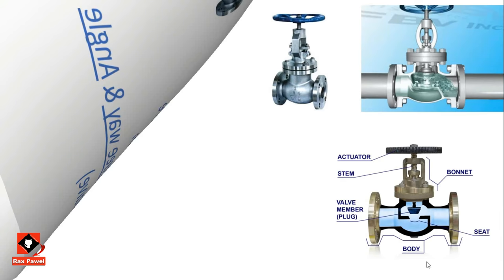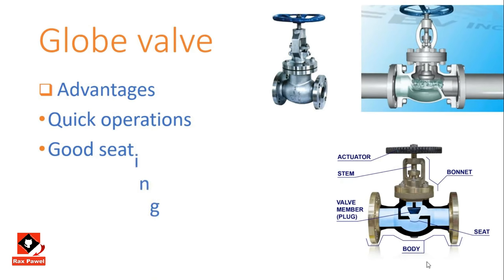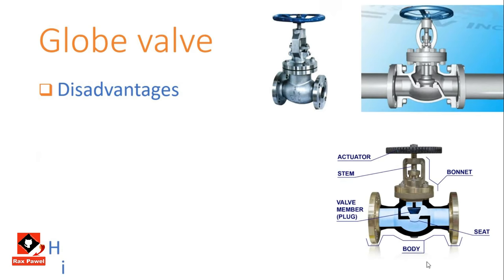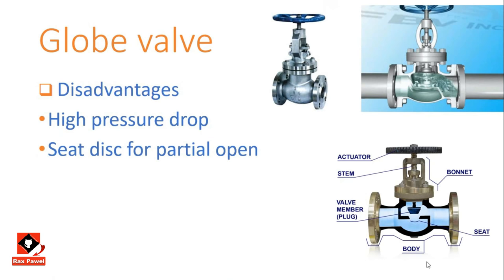Advantages of the globe valve: it can operate quickly due to its short stem, and it is the most reliable form of seating, providing positive shut-off. Disadvantages: it has a higher pressure drop than the gate valve, and the seat disc is subject to wear when partially open.